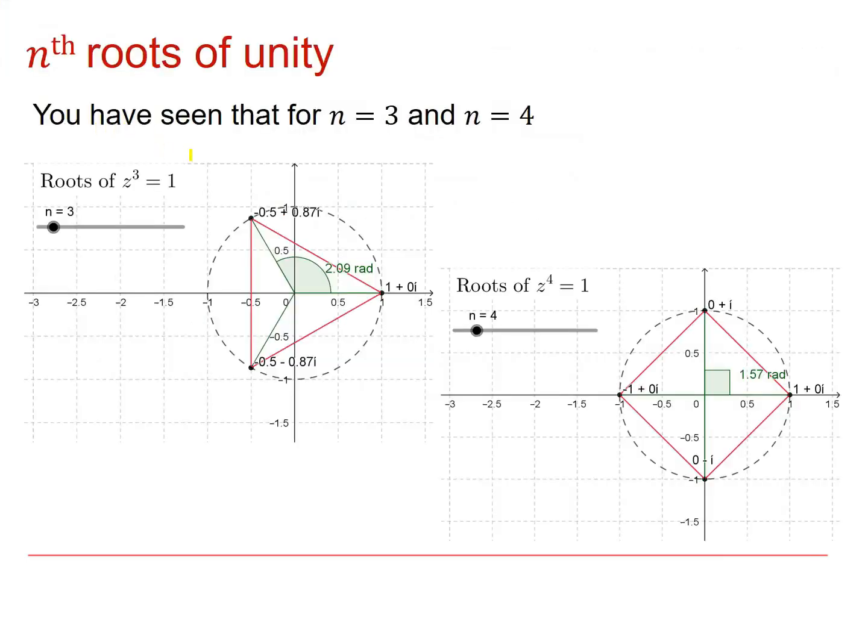You've seen that when n equals 3 and when n equals 4, the roots of z cubed equals 1 give you 3 roots spaced evenly around a circle, and when n equals 4, you get 4 roots spaced evenly around the same circle, radius 1.